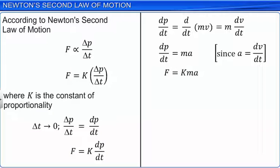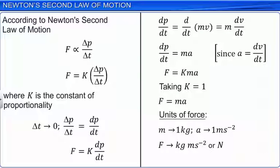By choosing the value of K as 1, we can define the unit of force in the SI system. In the SI system, the unit force is one that causes an acceleration of 1 meter per second square to a mass of 1 kilogram. This unit force is known as a Newton.